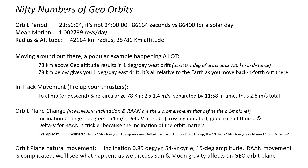The radius of a geo-orbit is 42,164 kilometers — a cool number to memorize. And the altitude above the Earth's surface is 35,786 kilometers. So there you have the satellite out at geo, happy sitting over its line of longitude, perhaps at zero inclination so it's not oscillating up and down.